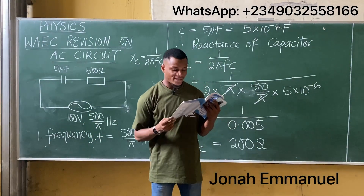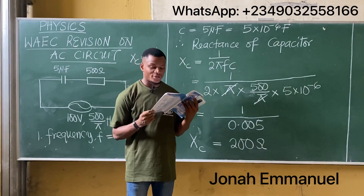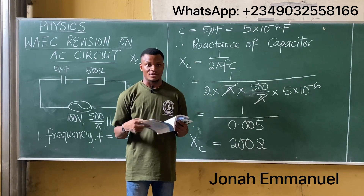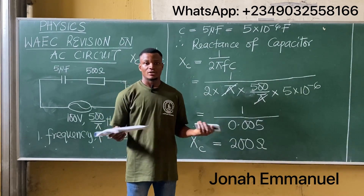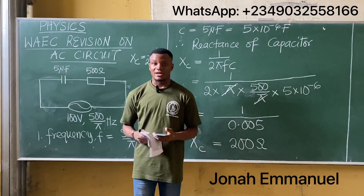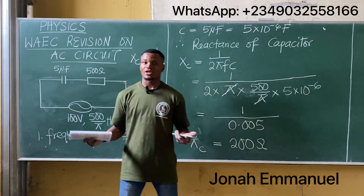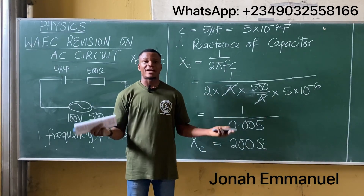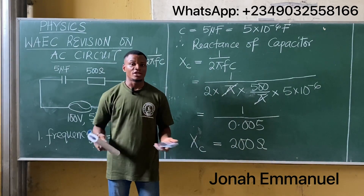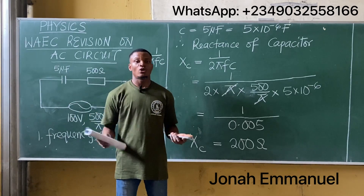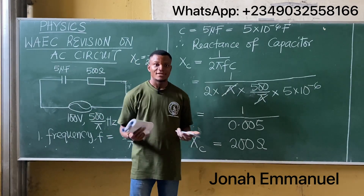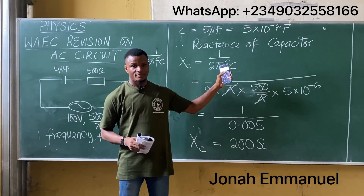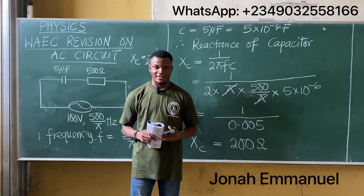Checking the options, 200 ohms is option C — so the correct answer is option C. These are a few questions on reactance for WAEC revision. We've already covered AC circuits from scratch in another video, so if you want the full tutorial simply click on the video shown here. See you in our next class.